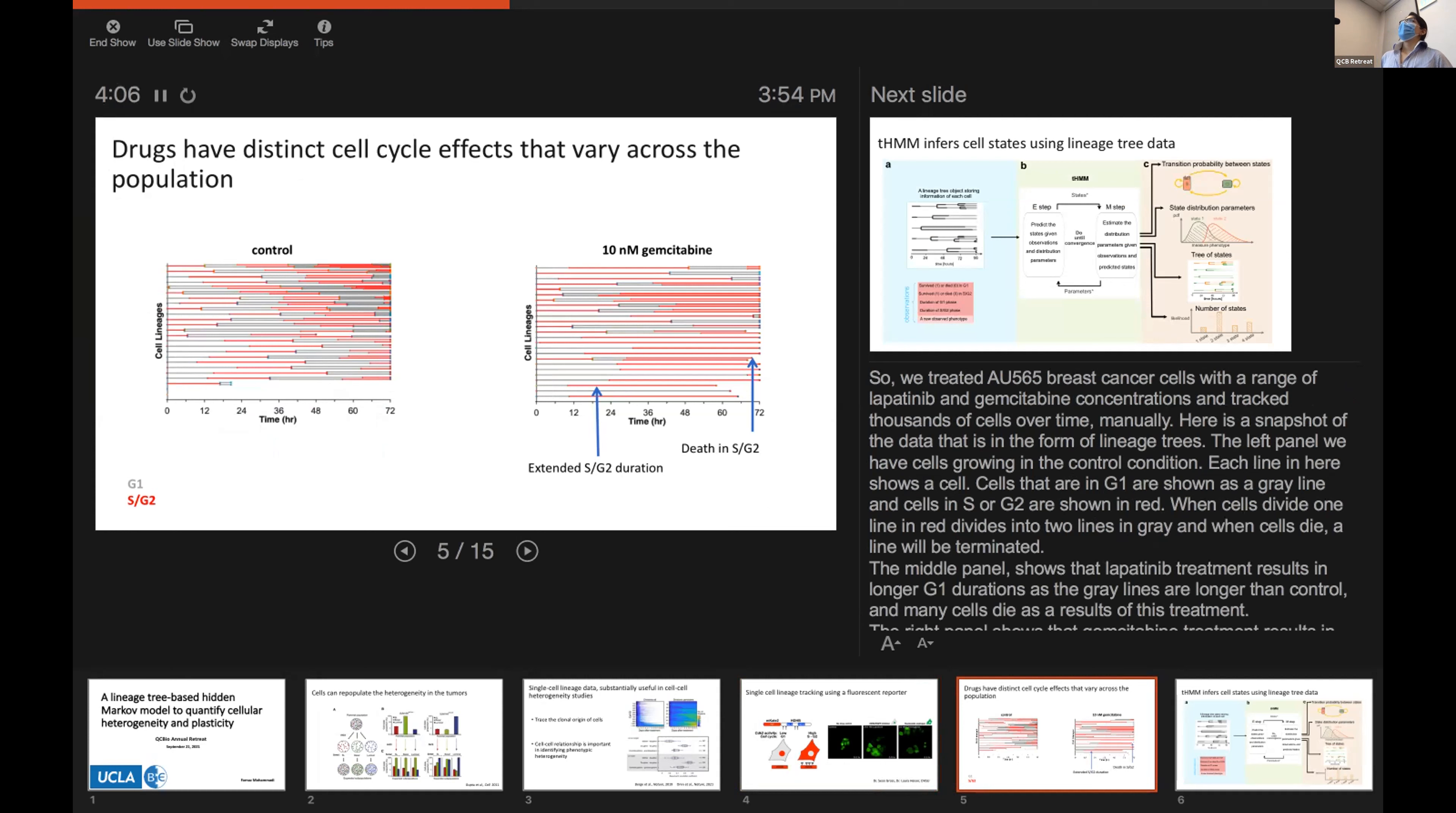We have each cell in here shown as a line. Cells that are spending their time in G1 are shown as gray lines, and then cells transition to G2, the line becomes a red line. So, we can show the division in here, and then cells die, a line is terminated.